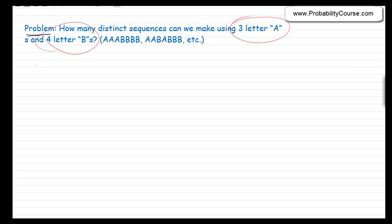So I could have A, A, A, B, B, B, B, or A, B, A, A, B, B, B. As you see in any of these, there are three A's and four B's. So the length of the sequence is always seven and there are three A's and four B's.